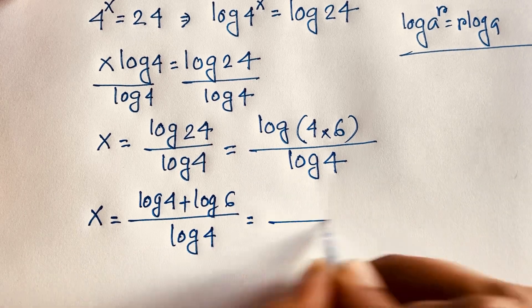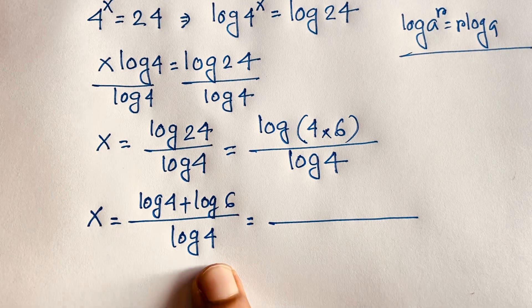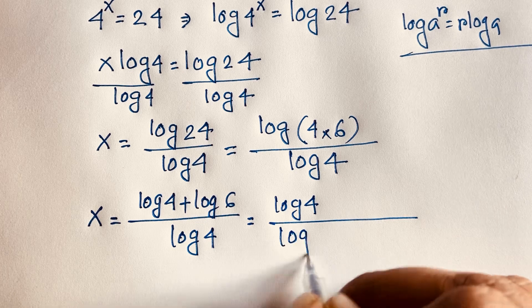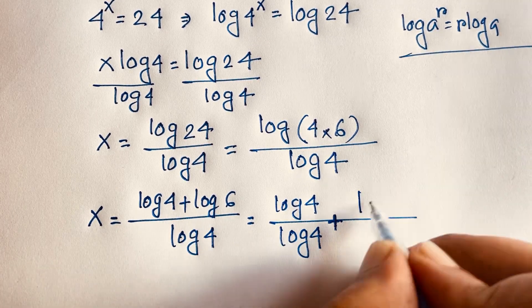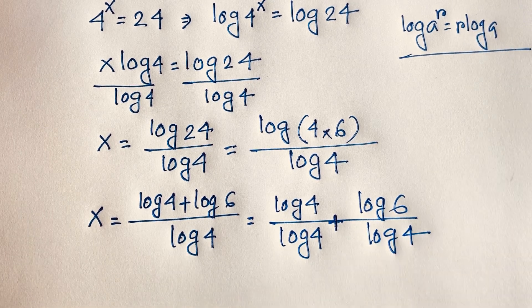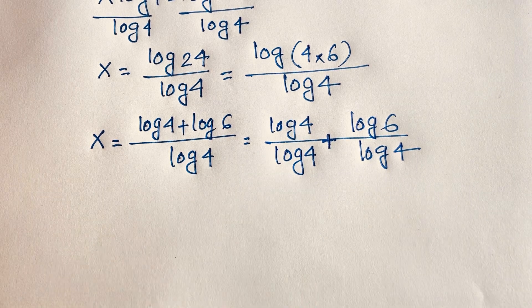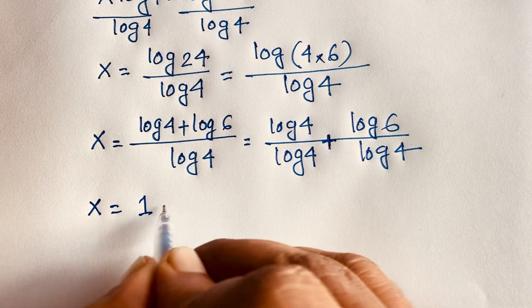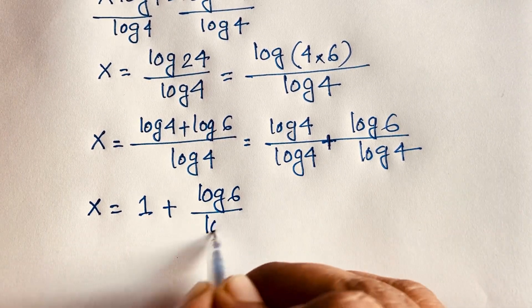Then I can split this expression: it will be log 4 divided by log 4, plus log 6 divided by log 4. The log 4 over log 4 cancels out, so we find out x is equal to 1 plus log 6 over log 4.